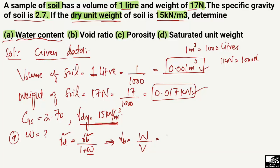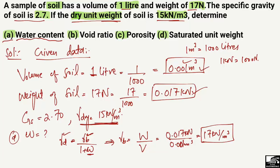Bulk density equals total weight divided by total volume. The total weight is 0.017 kilonewton divided by the volume 0.001 cubic meters, giving a bulk density of 17 kilonewton per cubic meter. Now we rearrange the formula: (1 + w) equals gamma_bulk divided by gamma_dry.